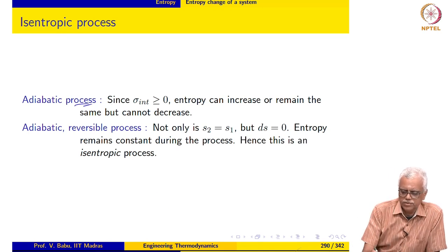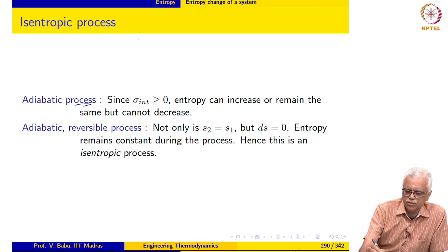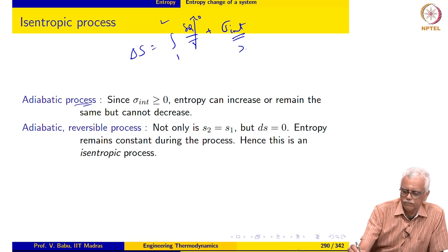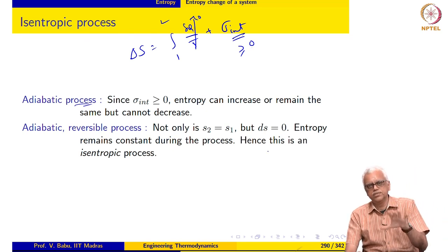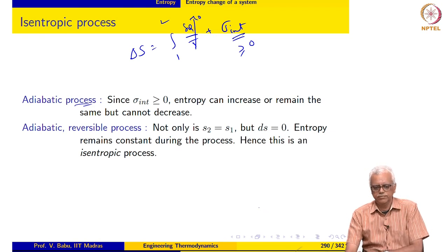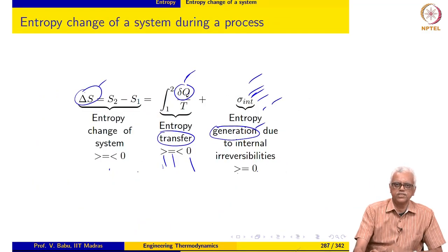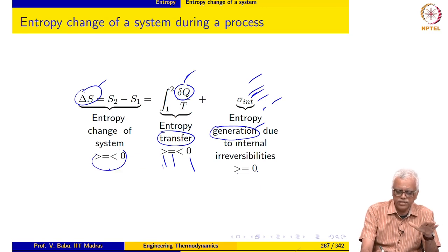In an adiabatic process, since δQ is zero, the entropy transfer term vanishes. Since σ_int is greater than or equal to zero, ΔS can be positive or remain the same — for an adiabatic process, entropy can increase or remain the same, it cannot decrease. That is very important. For a general process, as we noted before, the entropy of a system can increase, remain the same, or decrease.